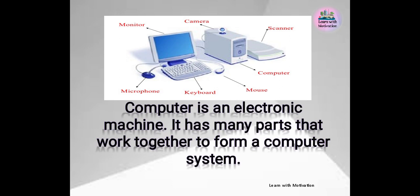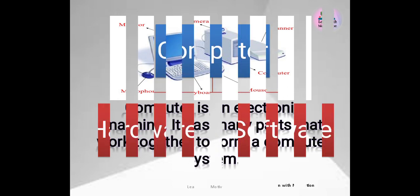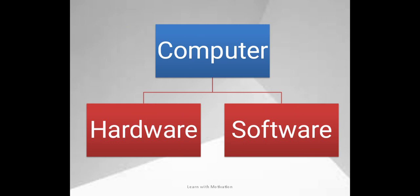Children, now you have understood that computer is an electronic machine. It has many parts like monitor, microphone, keyboard, camera, mouse, scanner etc. that work together to form a computer system. Further, computer is classified into the following categories: hardware and software.